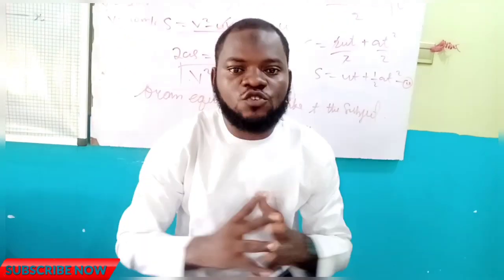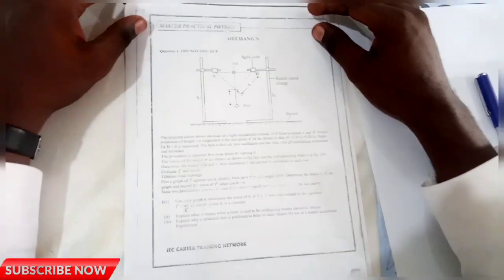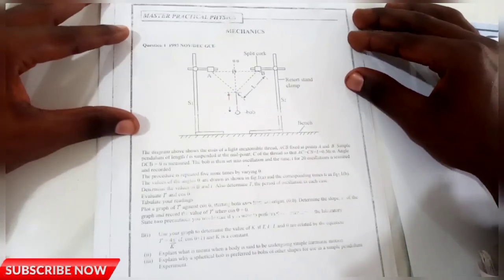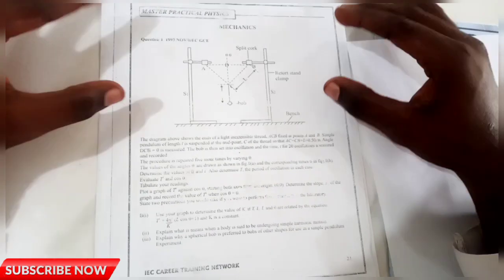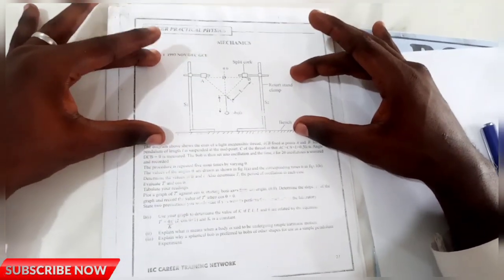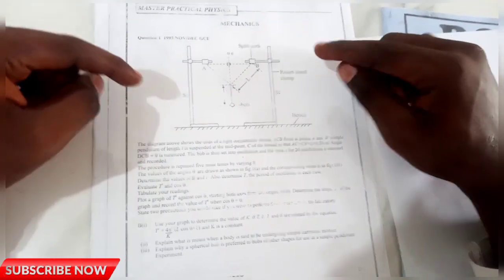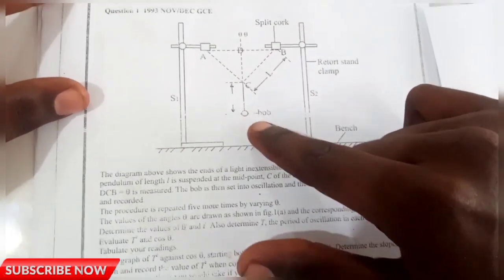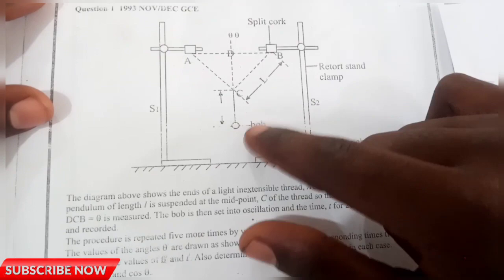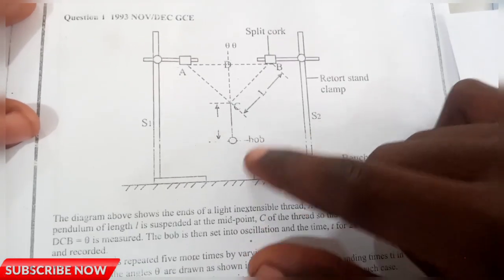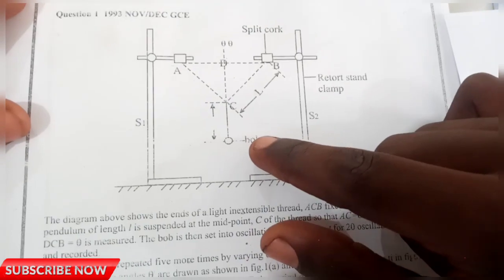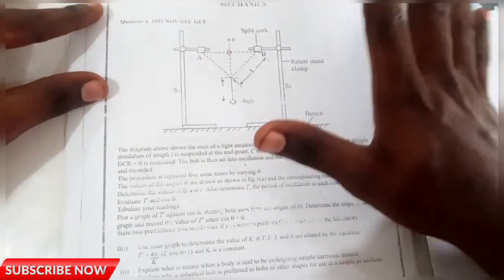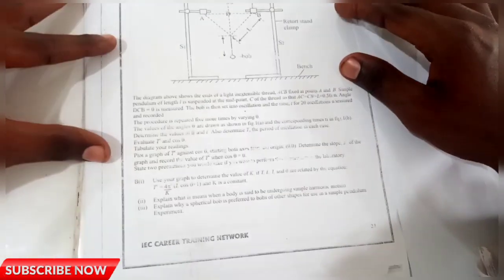Now let's start with question number one. It's from the 1993 GCE, question one. How will I answer this question as a student? First, I'll look at the diagram very well. I can see two retort stands S1 and S2, and a pendulum bob. Immediately I see this pendulum bob, the first thing that comes to my mind is that this experiment is talking about simple harmonic motion.